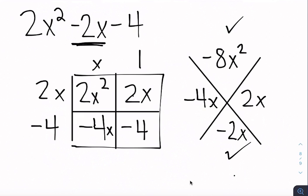Let's just double check. 2x times x is 2x squared. 2x times 1 is 2x. That one works. Negative 4x. Negative 4. Perfect.